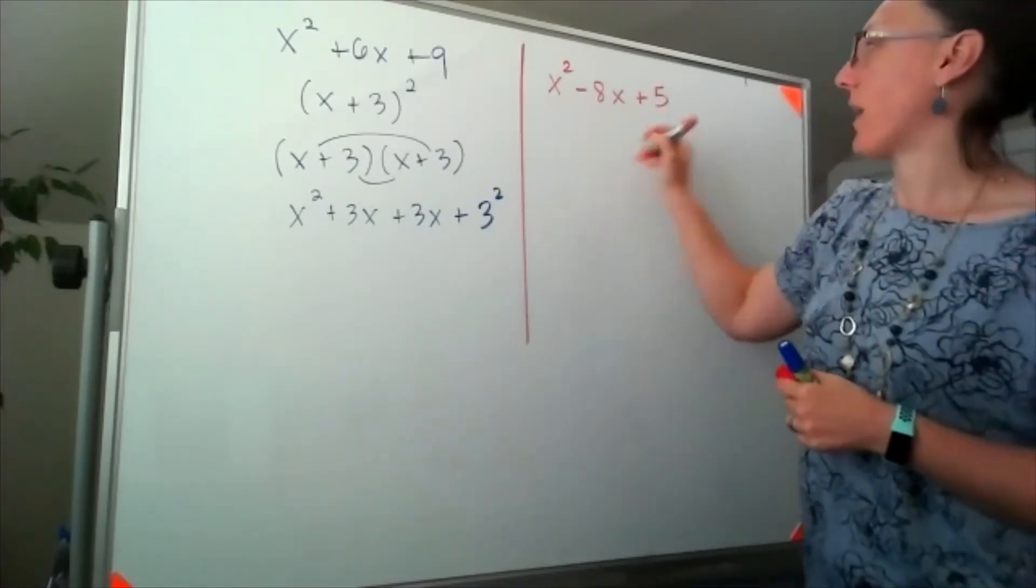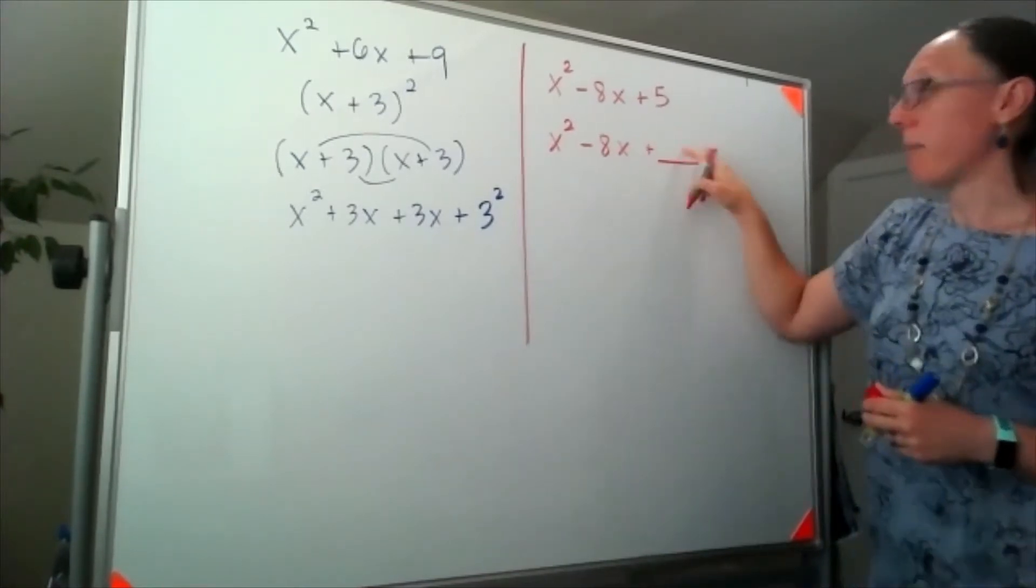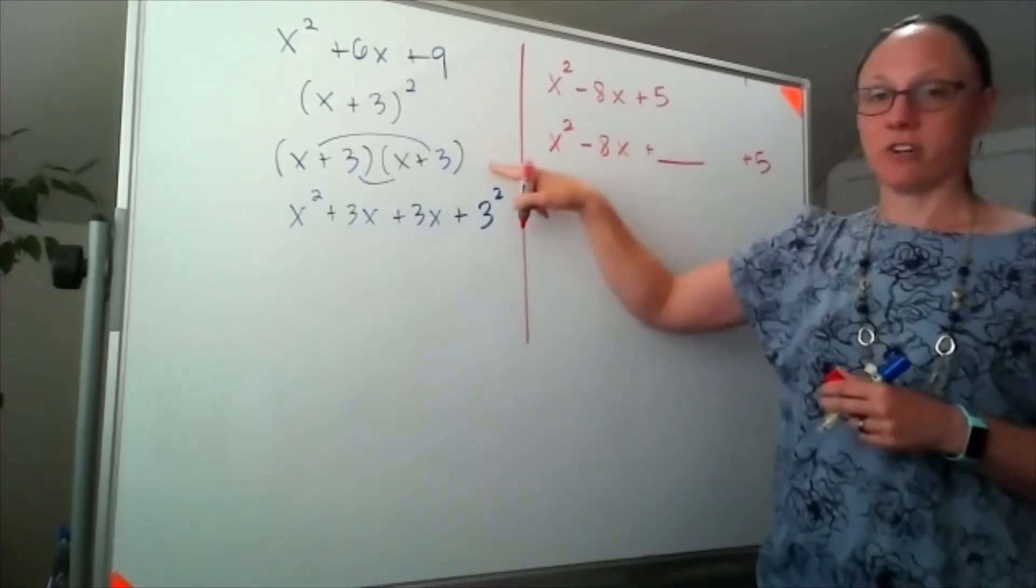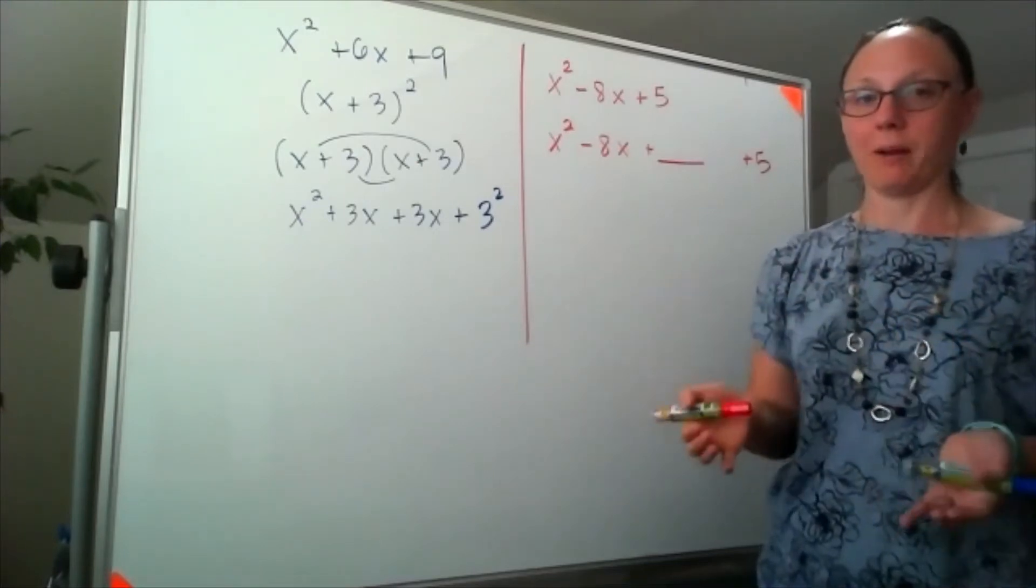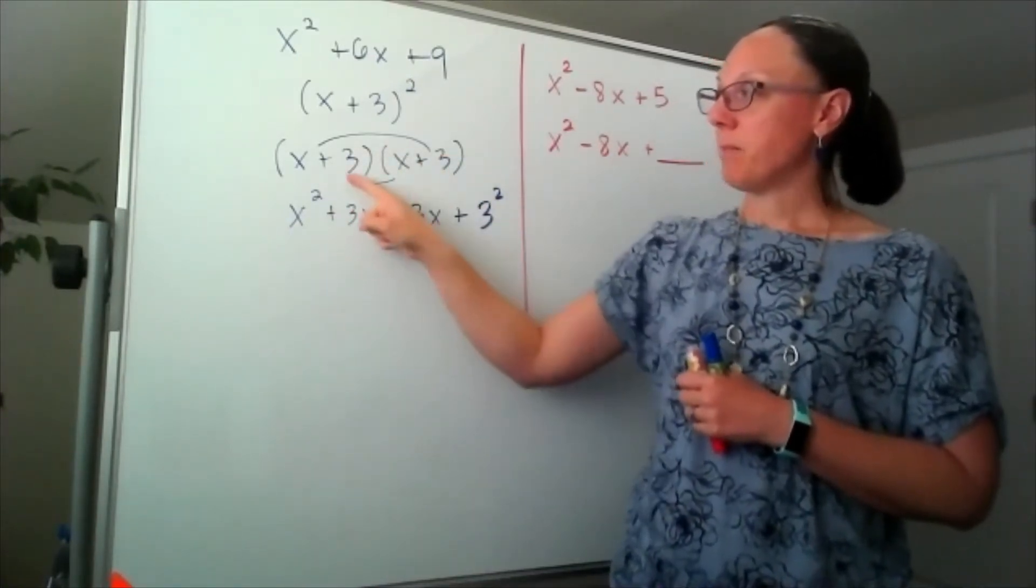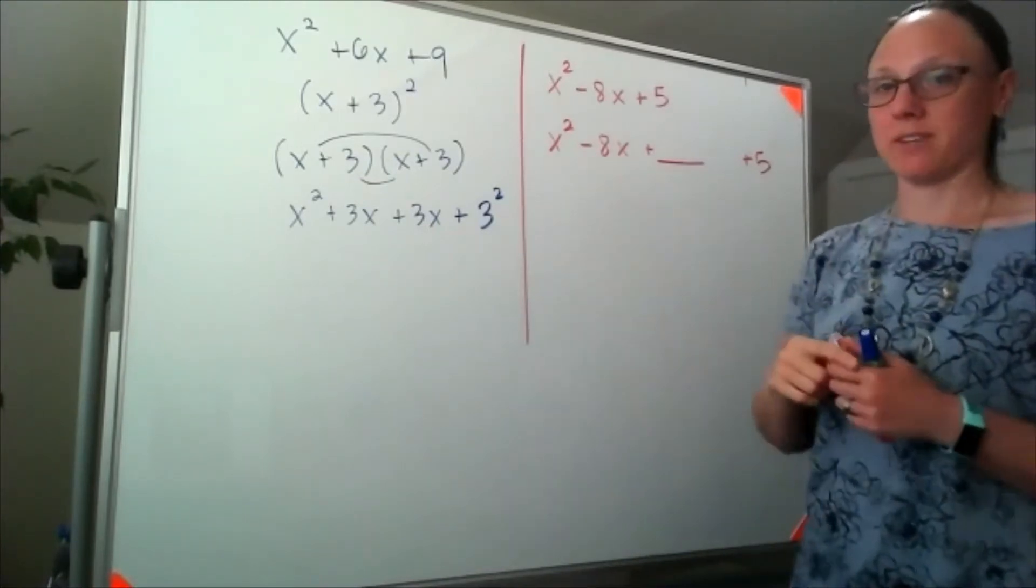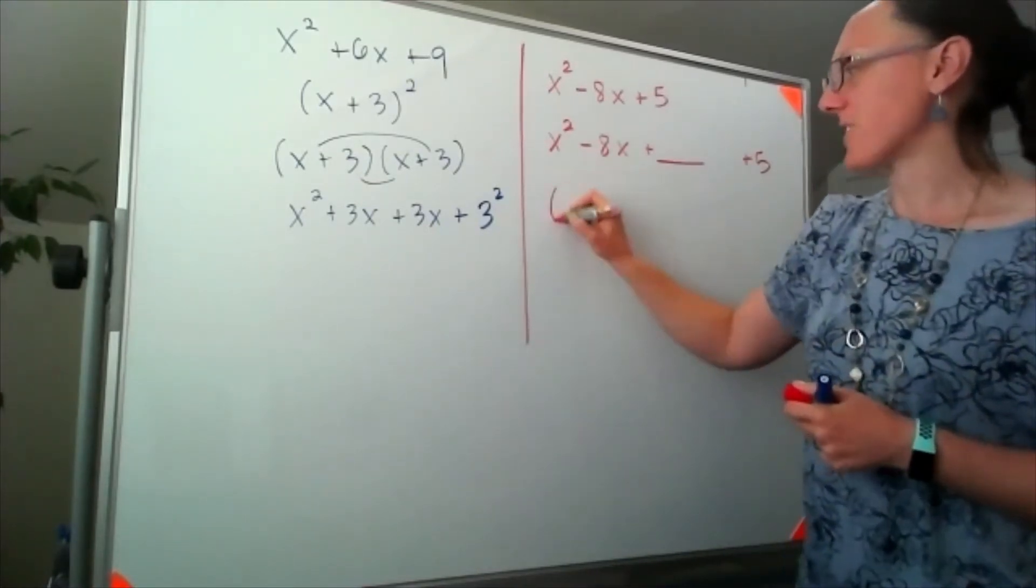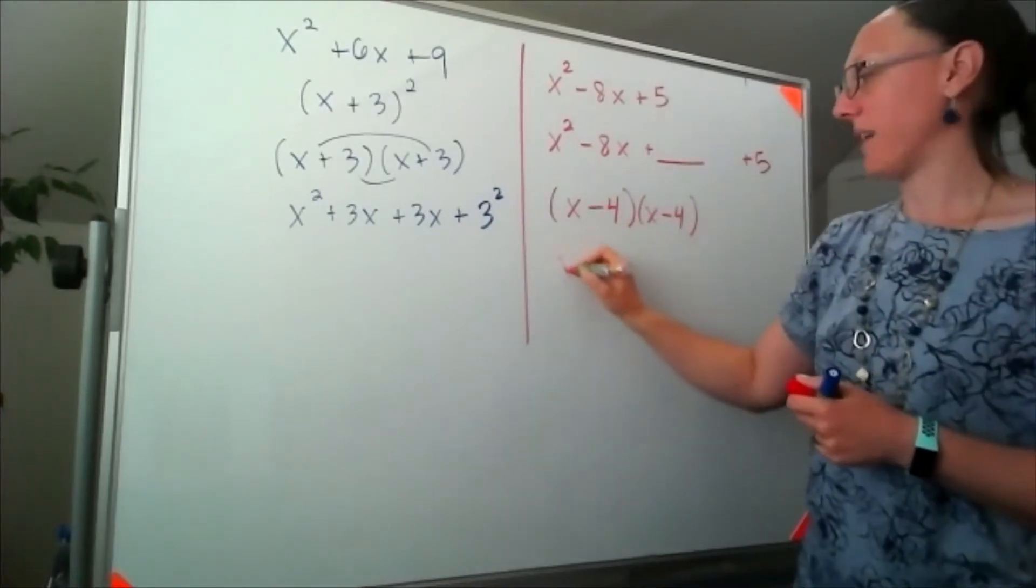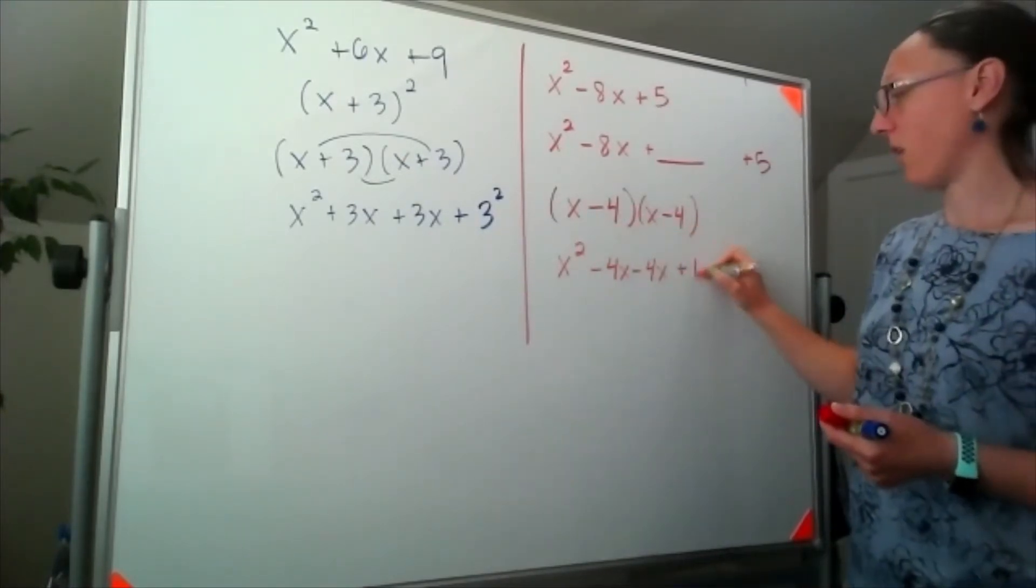So if I would like this to be a perfect square, I'm going to scoot that 5 off to the side for a second and look at that x squared minus 8x and imagine that there's something I could put in here that would make this factor in that same way where we've got one thing multiplied by itself. So the trick here is to recognize that the way this multiplies out, whatever is in here with the x, we're always going to end up with 2 of them, which means that negative 8x represents 2 of something or it has to represent an x minus 4 times an x minus 4. So that when I multiply these out, I'd have x squared minus 4x minus 4x plus negative 4 times negative 4 is going to give me 16.